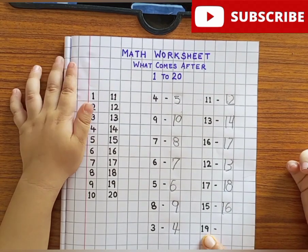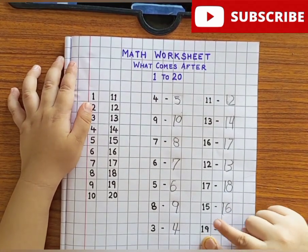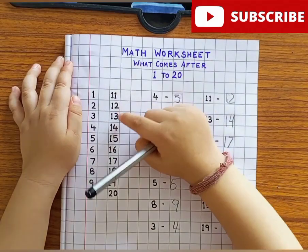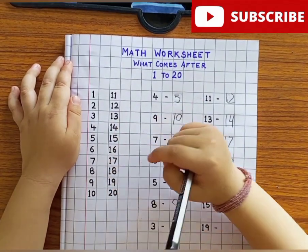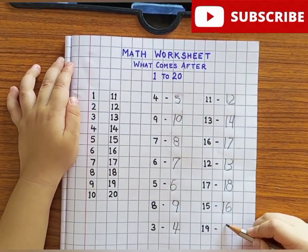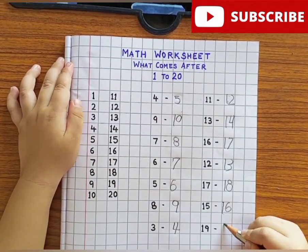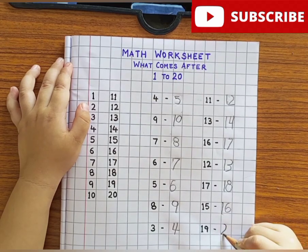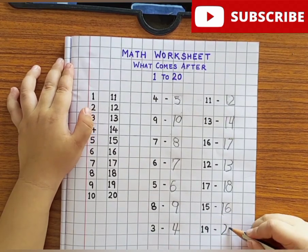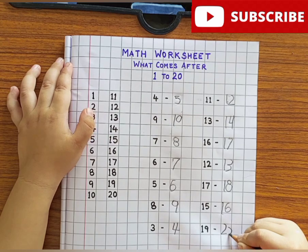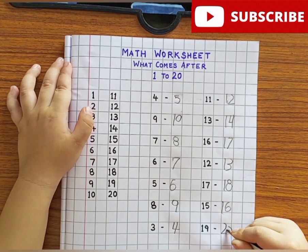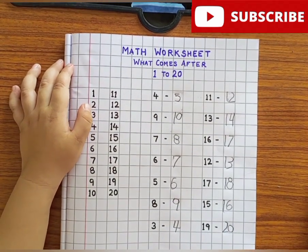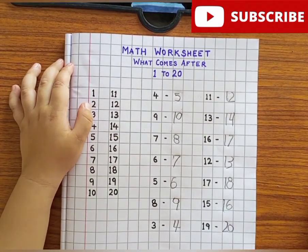This is number 19. What comes after 19? 20. Find number 20. This is. Very good. Write in the box. Yes. Very nice — 2, 0 — 20. Good job, Arav. Well done.